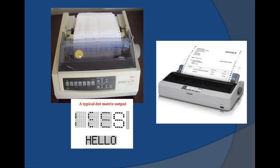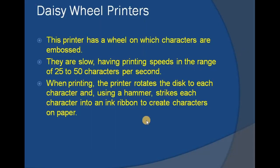The dot matrix printer consists of a print head that activates pins for each character and moves horizontally across the page, printing character by character. Once an entire line is finished, the paper moves and the print head returns to the left side to start the next line — similar to a cursor movement. For faster printing, many dot matrix printers print in both directions, left to right and right to left, so they are also called bidirectional printers.